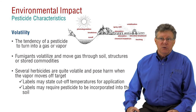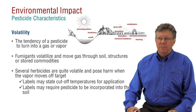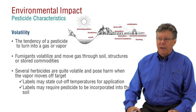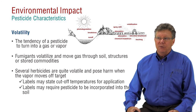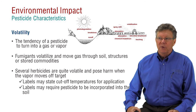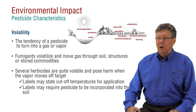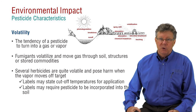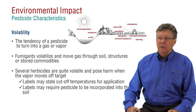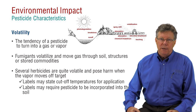However, under certain field conditions, some herbicides volatilize and move off target, possibly reaching susceptible plants. Because manufacturers have screened their products for this characteristic, they put volatility warning statements on their labels. So look for cut-off temperatures listed for certain herbicides. This is also why soil fumigant labels require immediate incorporation and soil sealing.